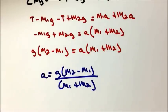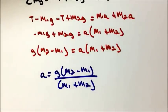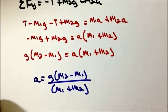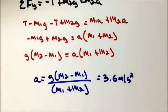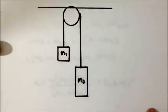We know M1 is 1.3 kilograms and M2 is 2.8 kilograms. Substituting these values into our equation for A: A = 9.8 × (2.8 − 1.3) / (2.8 + 1.3), we obtain the numerical value of the acceleration: 3.58, or 3.6 meters per second squared. Notice that 3.6 is positive, meaning the system will accelerate in the clockwise, or positive direction we have chosen.